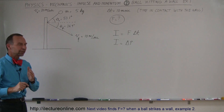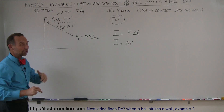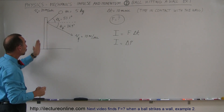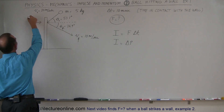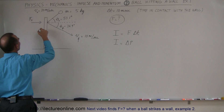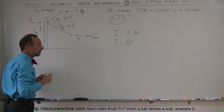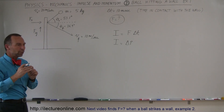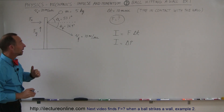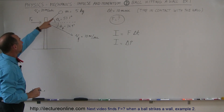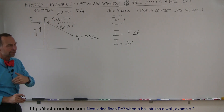Assuming there's friction between the ball and the wall, there will be a force in the x-direction that does not require friction, but there will also be a force in the y-direction. So we can assume there's going to be a force in the x-direction and a force in the y-direction. The wall will exert a force on the ball both in the x-direction and the y-direction, which means the momentum of the ball is going to change in both directions.